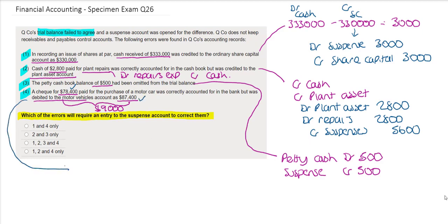Therefore to adjust for this error we will need to reduce the motor vehicles account by $9,000. So we're going to credit motor vehicles and then the other side is a debit to the suspense account.